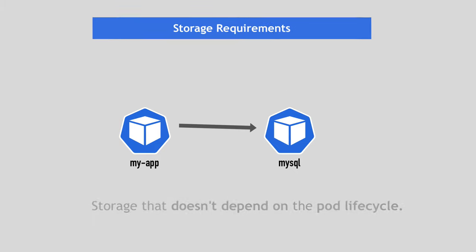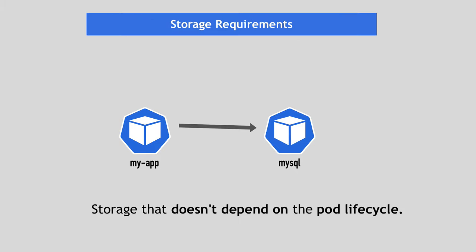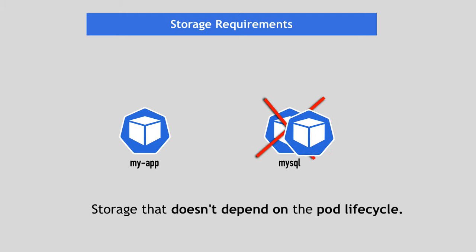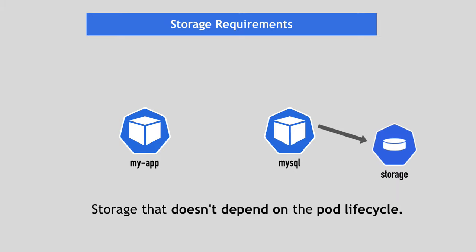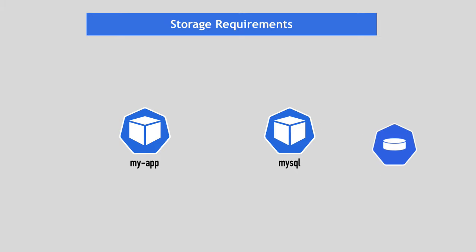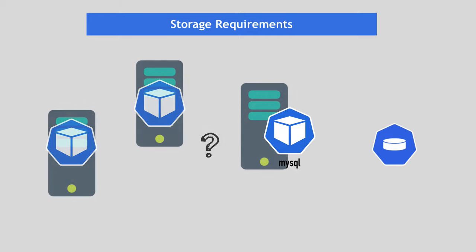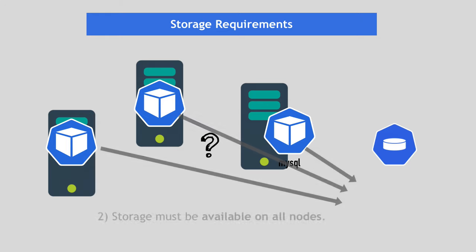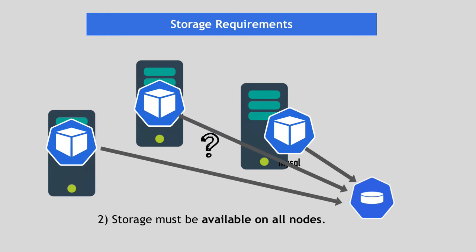That's something you have to explicitly configure for each application that needs saving data between pod restarts. You need a storage that doesn't depend on the pod lifecycle, so it will still be there when the pod dies and a new one gets created, so the new pod can pick up where the previous one left off. You don't know on which node the new pod restarts, so your storage must also be available on all nodes, not just one specific one.